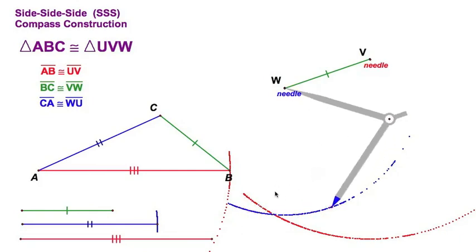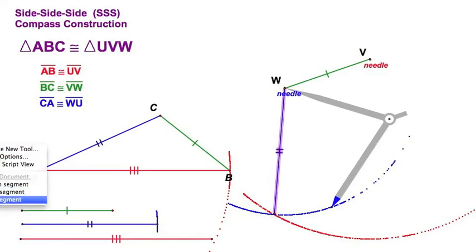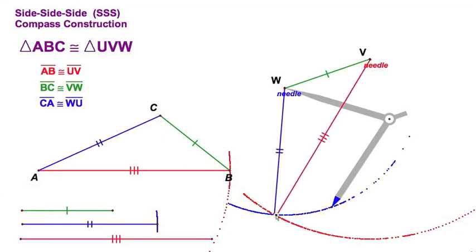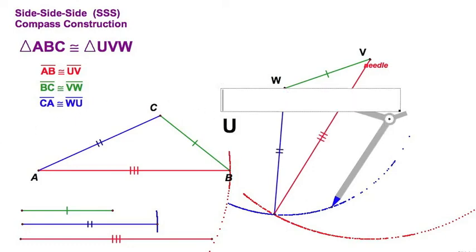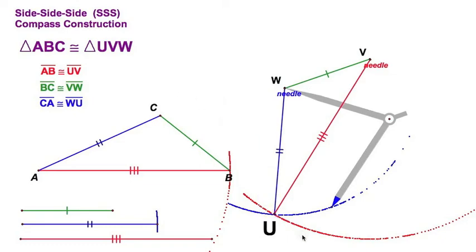We're going to put that intersection point here. I'm going to take my straight edge and draw what we call the medium or blue segment there, then make my long segment over here. Make sure you remember that you've got to label this point — we're going to call that point U. So there you go: you've got triangle UVW congruent to triangle ABC.